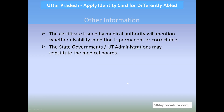These websites have been linked at respective places for your convenience to save your valuable time. The certificate issued by the medical authority will mention whether the disability condition is permanent or correctable. The state government or UT administration may constitute a medical board. We hope this video helped you — don't forget to give us a like and subscribe for more videos. Thank you for visiting WikiProcedure.com to learn how to apply for an ID card for the differently abled in Uttar Pradesh.